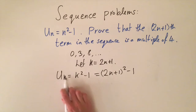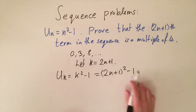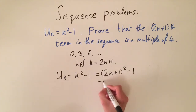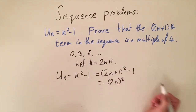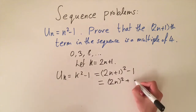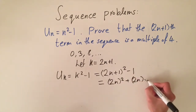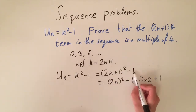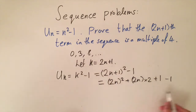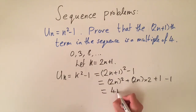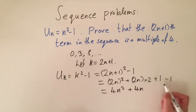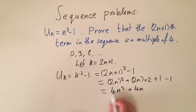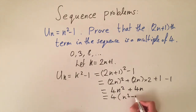Now we expand the brackets. (2n+1)² expands to 4n² + 4n + 1, and subtracting the 1 gives us 4n² + 4n. The +1 and -1 cancel out, and we can see that both remaining terms are multiples of four. We can factorize to get 4(n² + n), making it clear this is a multiple of four.